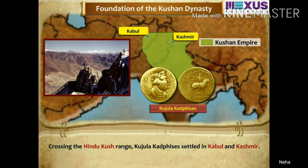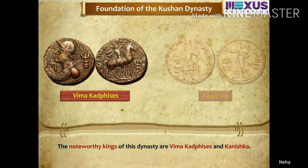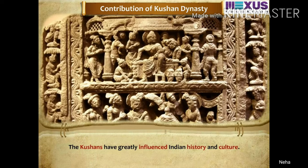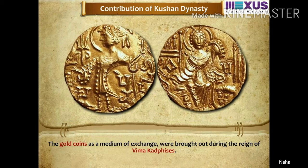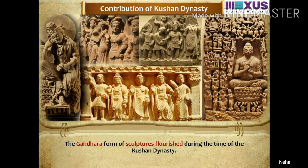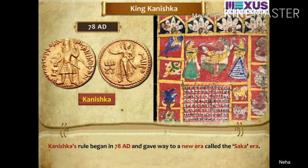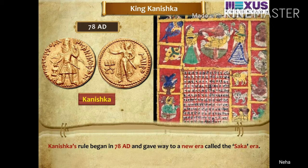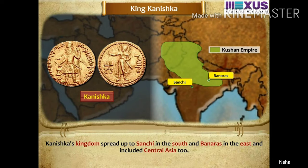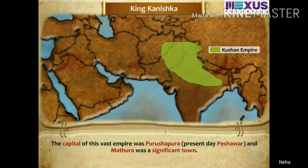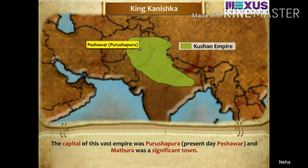The Kushan dynasty was founded by Kujula Kadphises, who united the Yuezhi tribes under one leadership. Crossing the Hindu Kush range, he settled in Kabul and Kashmir. The noteworthy kings of the dynasty are Vima Kadphises and Kanishka. The Kushans greatly influenced Indian history and culture. Gold coins as a medium of exchange were introduced during the reign of Vima Kadphises. The Gandhara form of sculpture flourished during the time of the Kushan dynasty. Kanishka's rule began in 78 AD and gave way to a new era called the Shaka era.